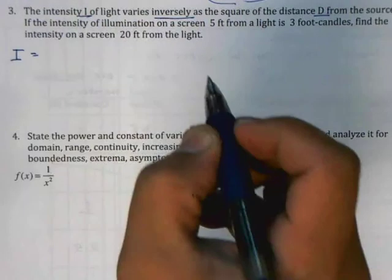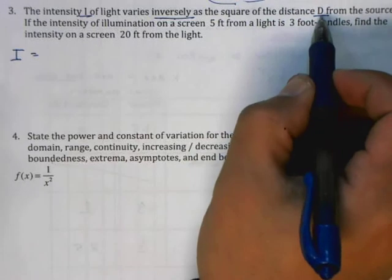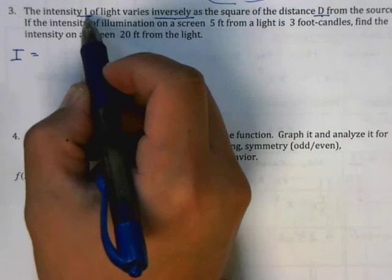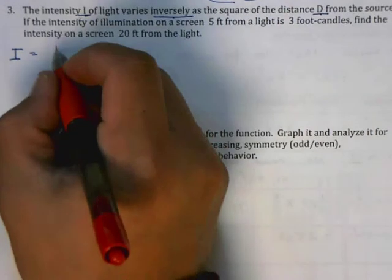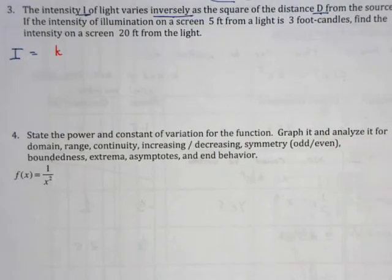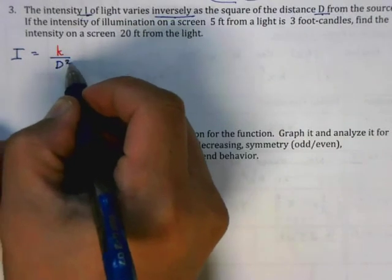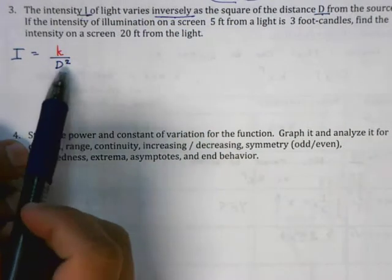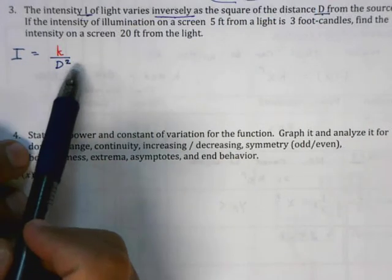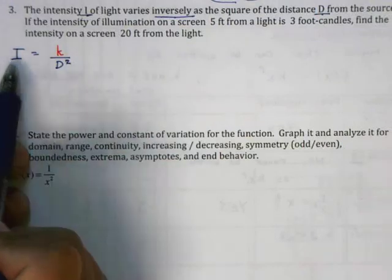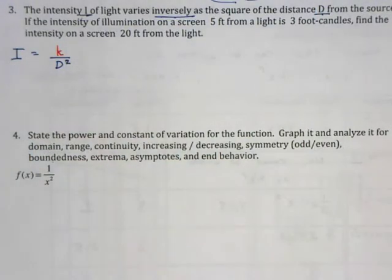This function is going to be I equals k divided by D squared. The key word here is inversely, that means as D gets very large, I should get very small. For that to apply, you're going to have a constant here k which we don't know the value for. In other words, as D gets large I get small because you're dividing by a large number. As D gets small you're dividing by a small number so I gets very large. That's the first part of the problem and that might actually be the most difficult part.